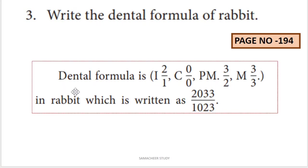Next question: write the dental formula of rabbit. There are four types of teeth — I for incisors, C for canines, PM for premolar, and M for molar.